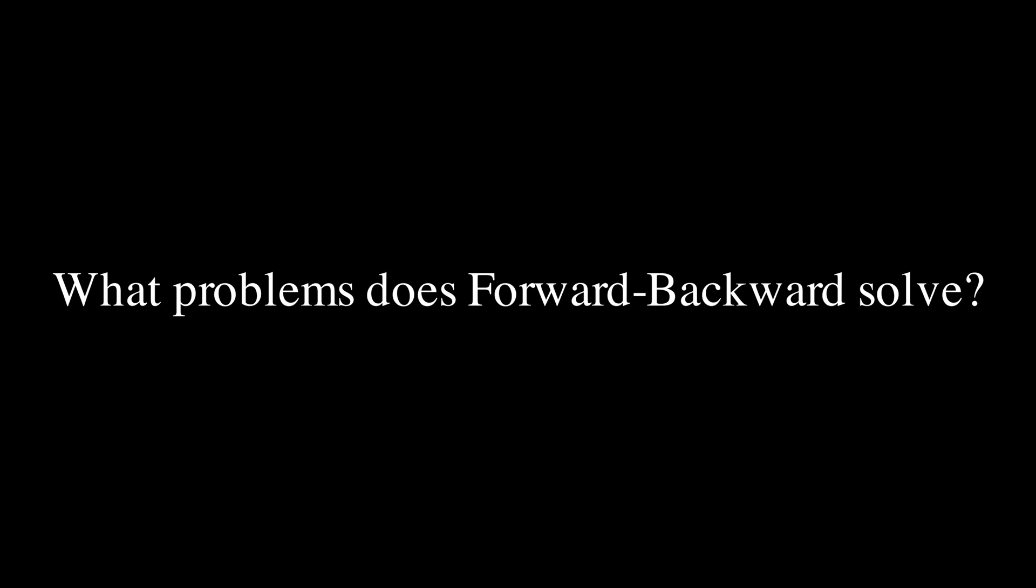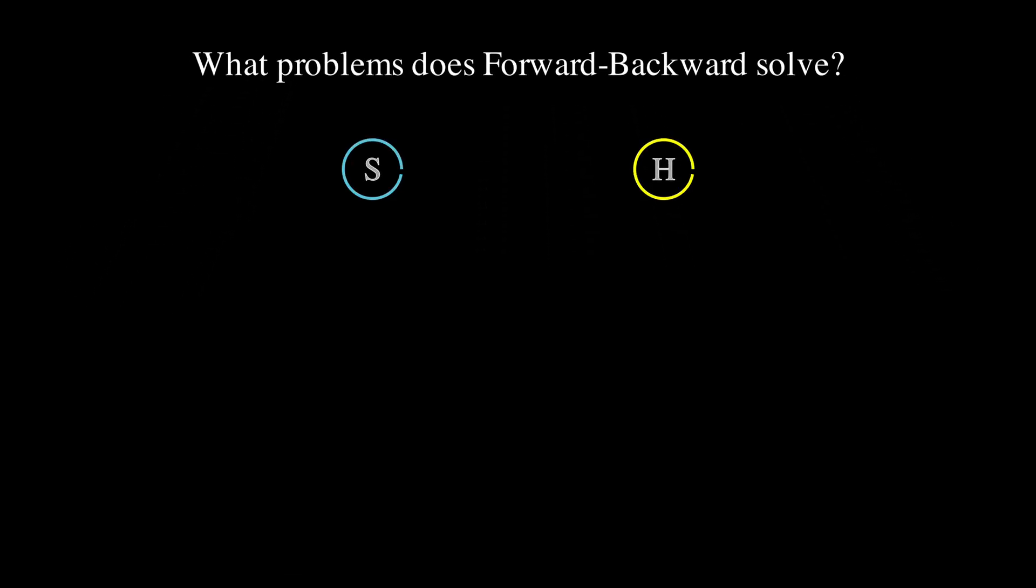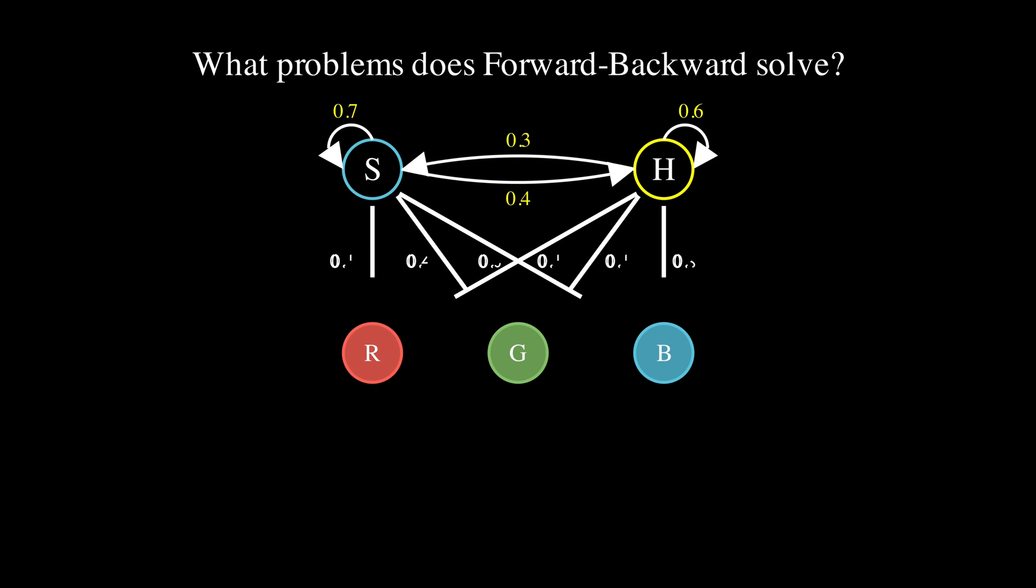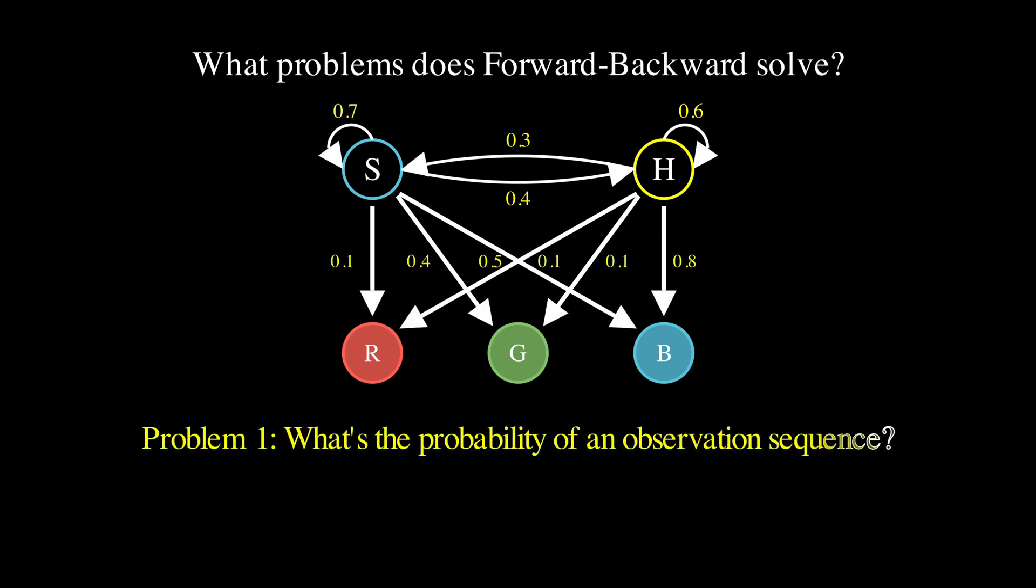Let me explain why this matters by going back to our mood example where someone's internal emotional state, either sad or happy, influences what color hat they choose to wear each day. With Viterbi, we could say given that we saw red, green, and blue hats, the most likely mood sequence was happy, sad, sad.